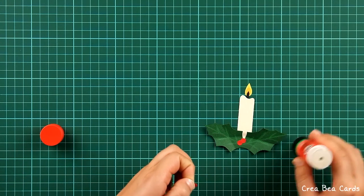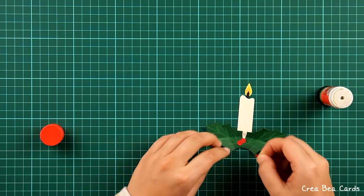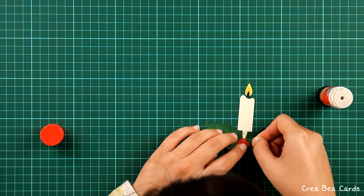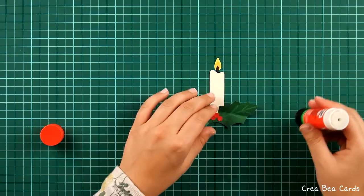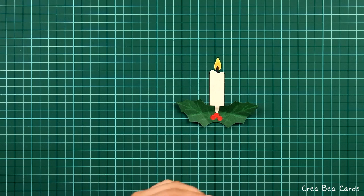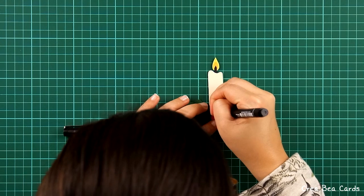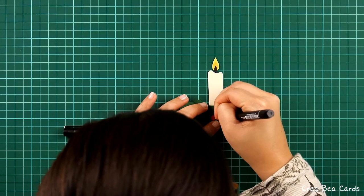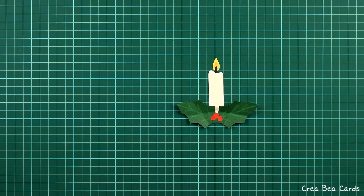Glue these rounds on top of the holly leaves, somewhere in the middle. Draw a small dot with a pen or fineliner on each berry to make it look more real.